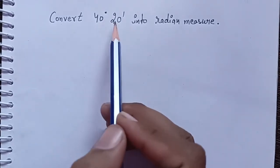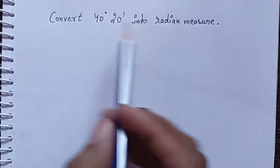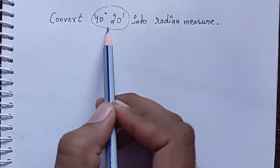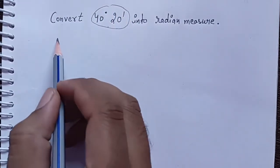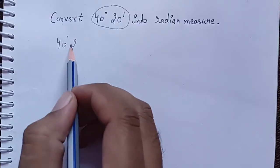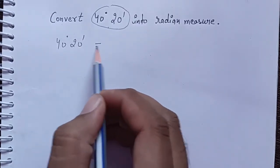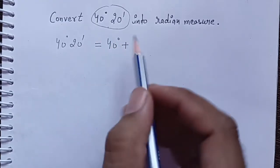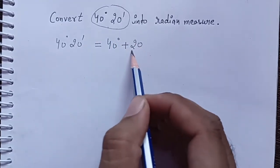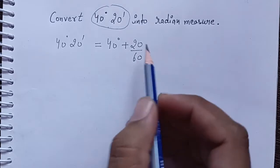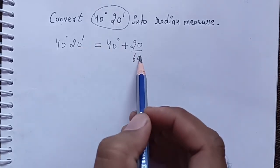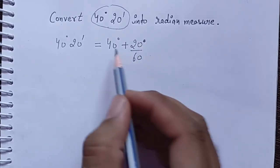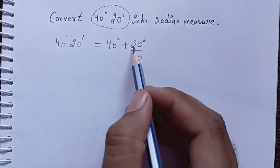Convert 40 degree 20 minute into radians. First we have to convert this value into fully degree. So 40 degree 20 minute, we have to write 40 degree plus 20 divided by 60. This value is minute, divided by 60 converts into degree, so both values are in degree.